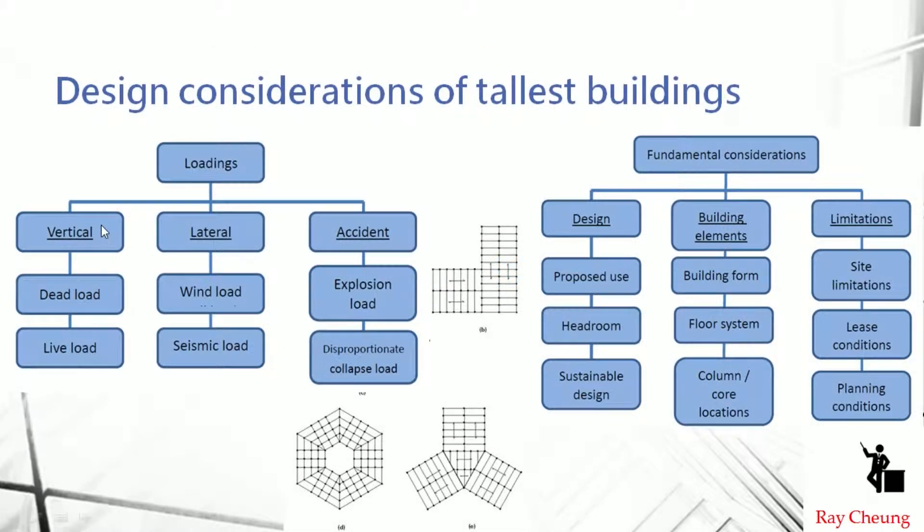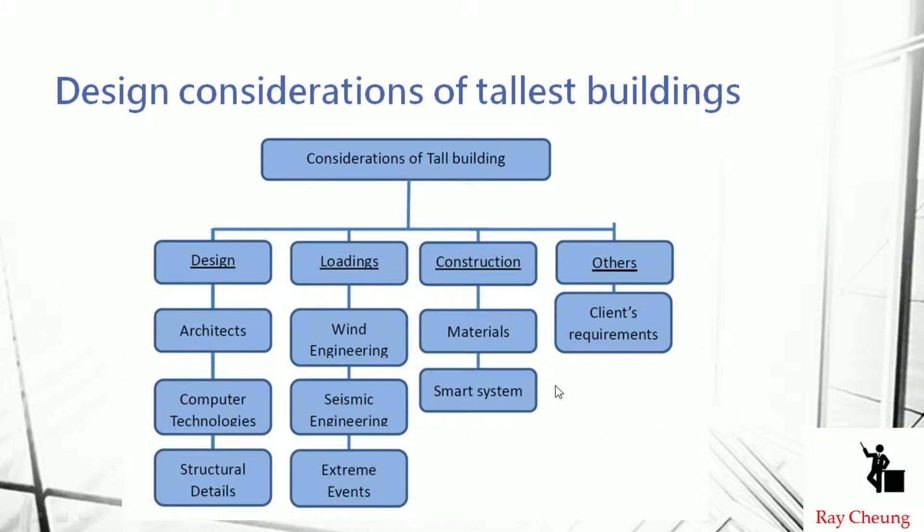As usual, like typical tall buildings, we need to take care of the typhoon or live load, wind load, and seismic load. Nowadays, if your building is so iconic, sometimes they need to think about the disproportional collapse load and explosion load after the 9/11 accidents. Sometimes the architect will think about the typical headroom and different forms. Sometimes the height and form of the building are also restricted by the lease or planning. You also need to pay attention to new materials.